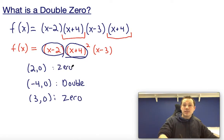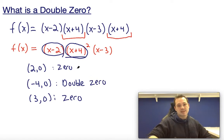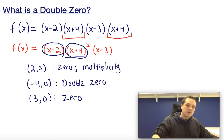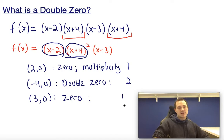And then (x-3) would lead us to a zero at the point (3,0). Now, sometimes instead of saying that something's a double zero or a zero, you may describe it as a zero with a certain multiplicity. For example, this first one, which has its zero at (2,0), we would say that it has a multiplicity of 1. This double zero, we would say, is something with a multiplicity of 2. And this last one, we would say, is something with a multiplicity of 1.